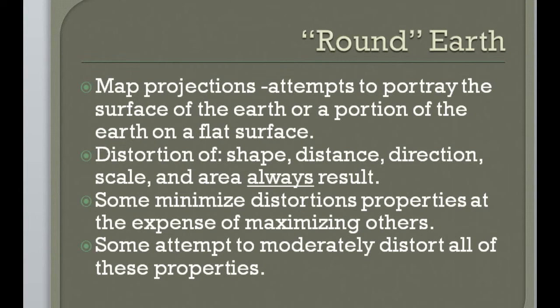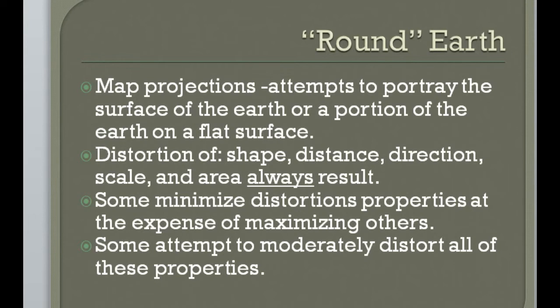If I need a map for navigation, I'm going to find a map that doesn't distort direction, because that's going to be really important to me. If I want a political map, I may need area and distance preserved. So different projections preserve different aspects.